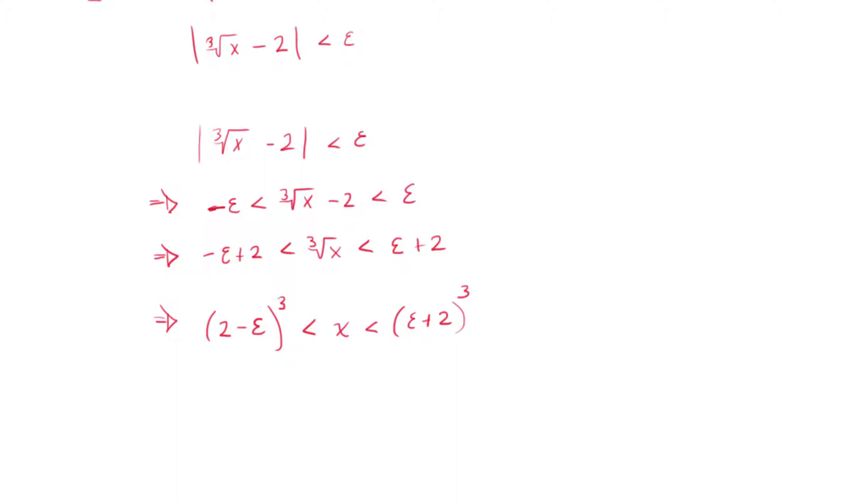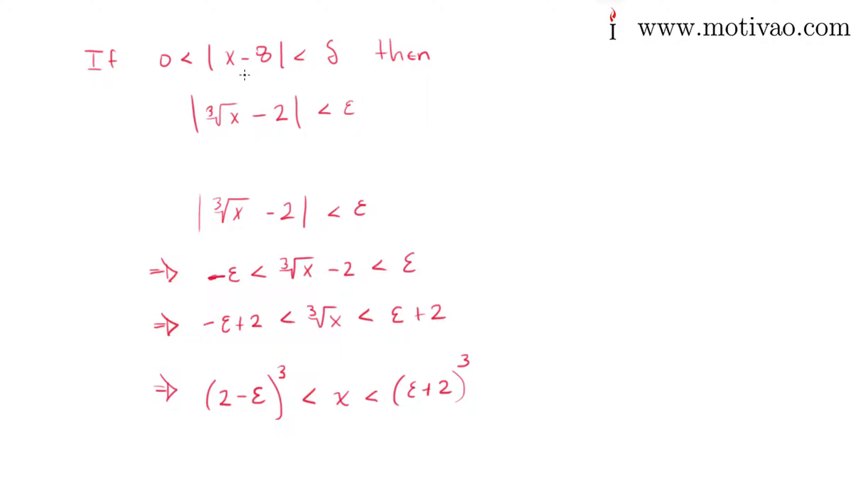Now we're going to use the initial fact. What does this mean? Well, 0 less than absolute value of x minus 8 is less than delta. Remember that being greater than 0 just means that x does not have to be the value of the inequality. So in this case, x doesn't have to be 8 in order for this epsilon delta to work.